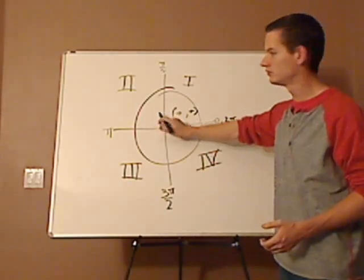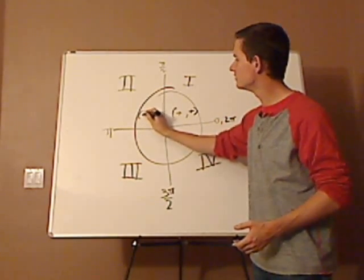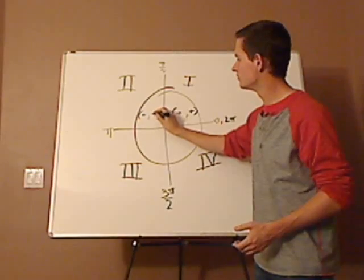In quadrant 2, what are the signs? Yeah, x is going to be negative and y is going to be positive.